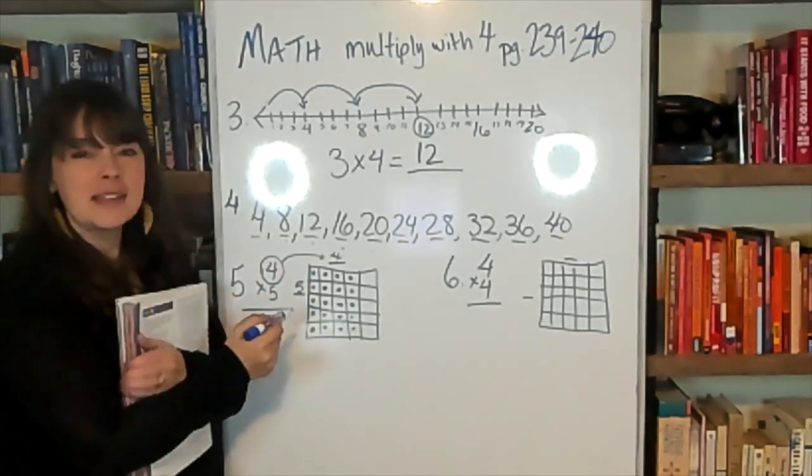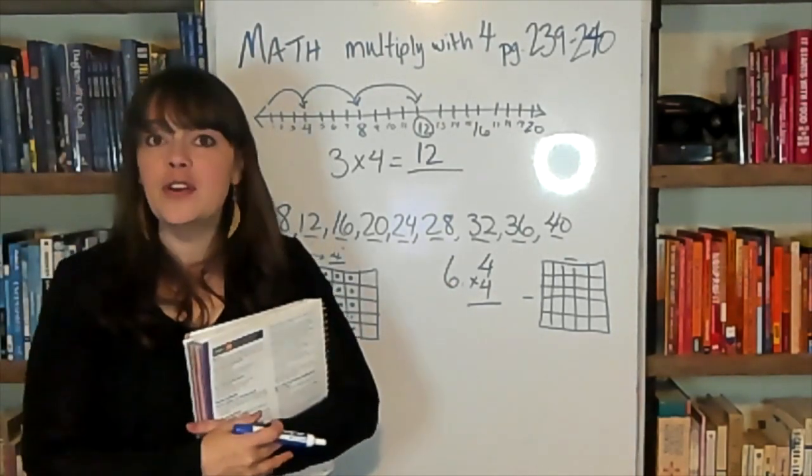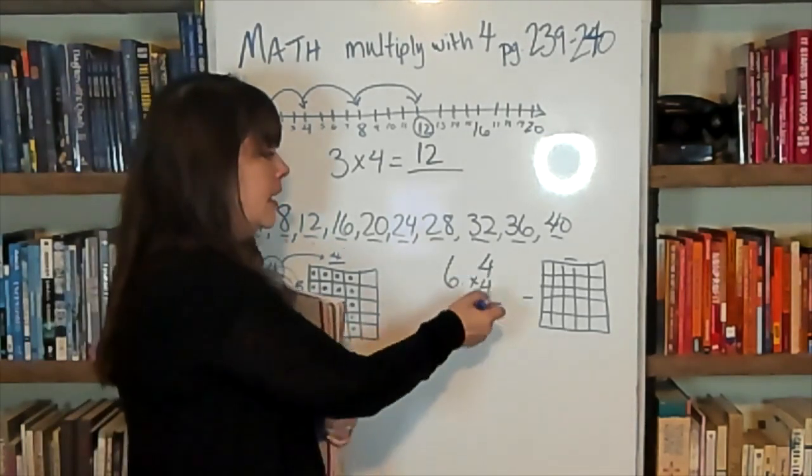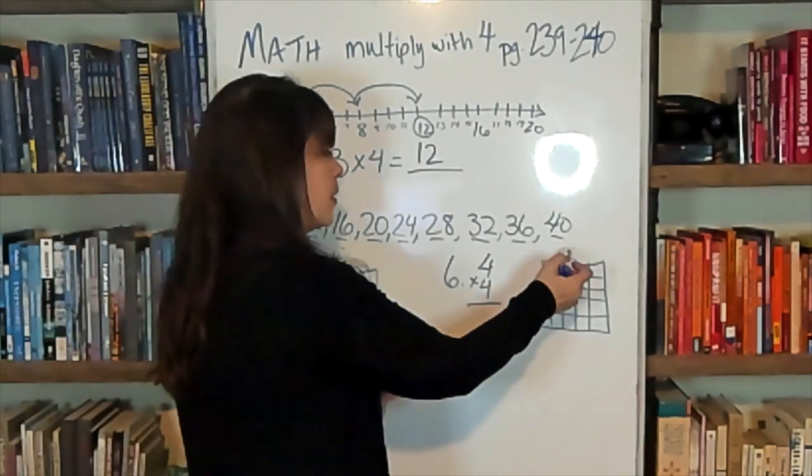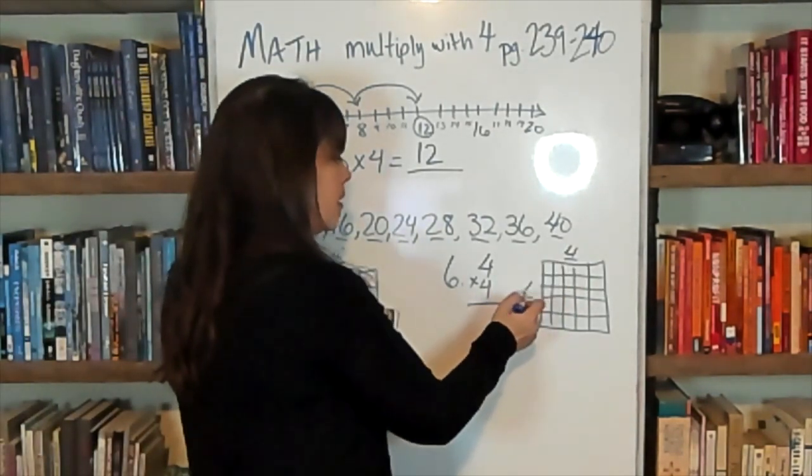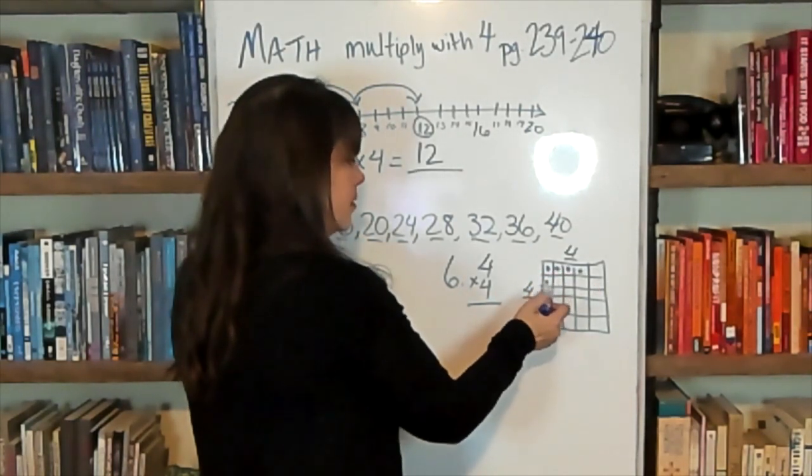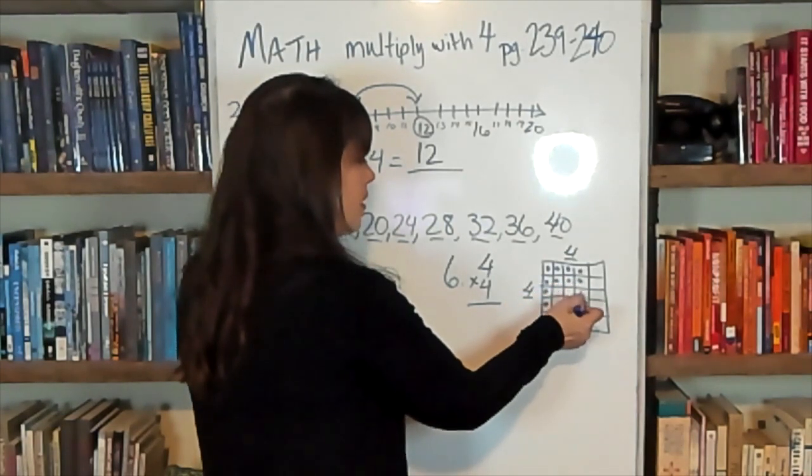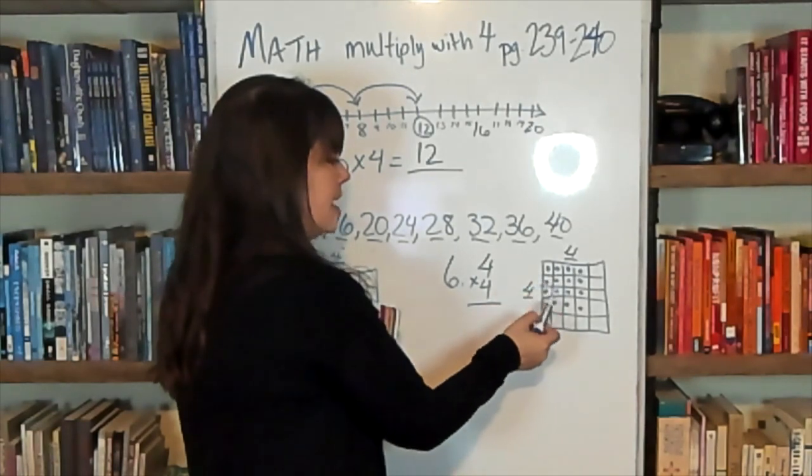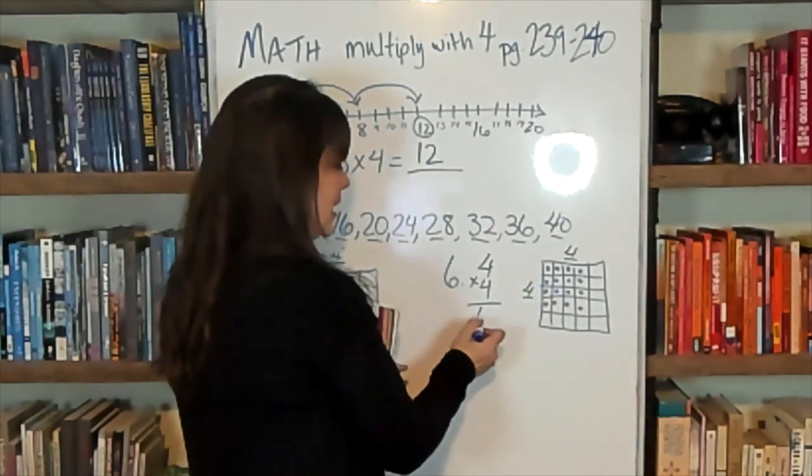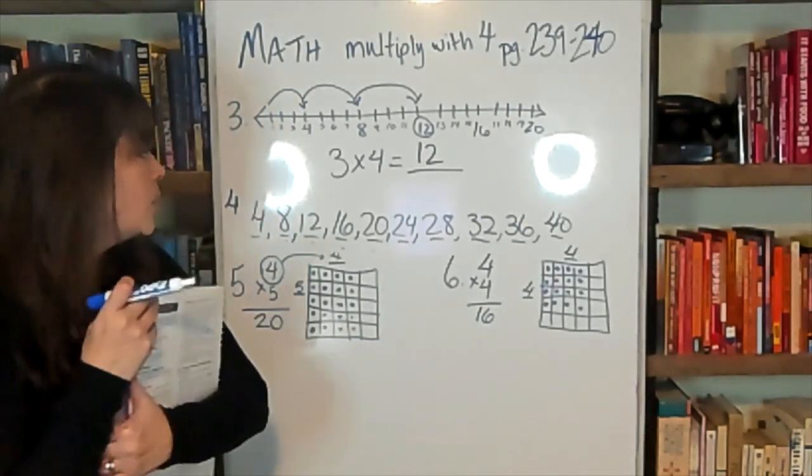So an array box can help you picture really what's happening in your multiplication problem. Number 6 is another of that same type of problem where we have the equation, 4 times 4 equals, and then we have the box over here to fill in. 4 times 4. Make sure it's 4 on both sides. And then we just fill it all the way in. And we get 4, 8, 12, 16. The answer is 16. 4 times 4 is 16.